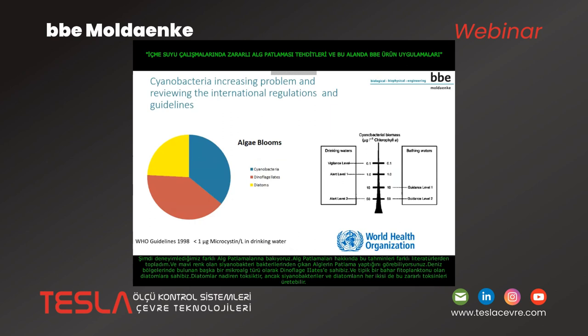Looking at the different types of algae blooms from various literature, algae blooms come up from cyanobacteria — that is the blue color — we have dinoflagellates as another form of microalgae found in marine zones, and we have diatoms, which are typical spring phytoplankton. Diatoms are rarely toxic, but cyanobacteria and dinoflagellates can both produce harmful toxins.